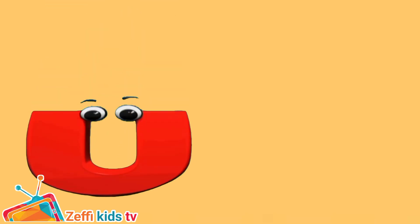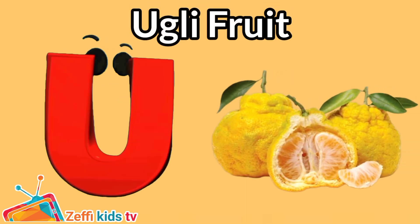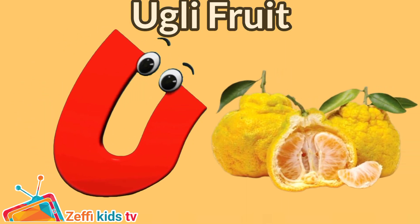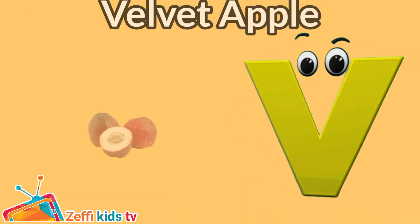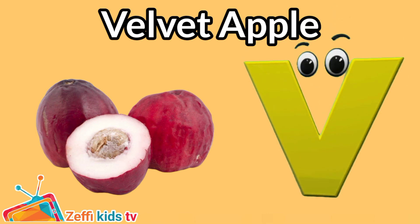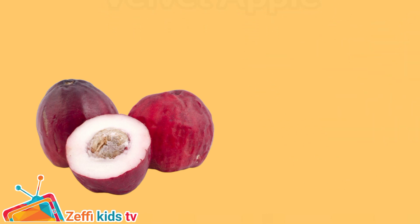U is for ugly fruit, u-u-ugly fruit. V is for velvet apple, v-v-v-velvet apple.